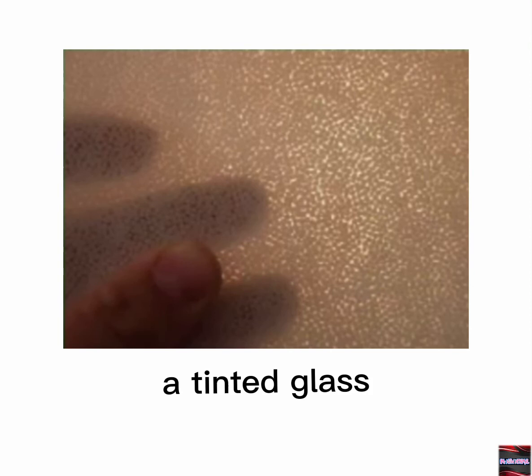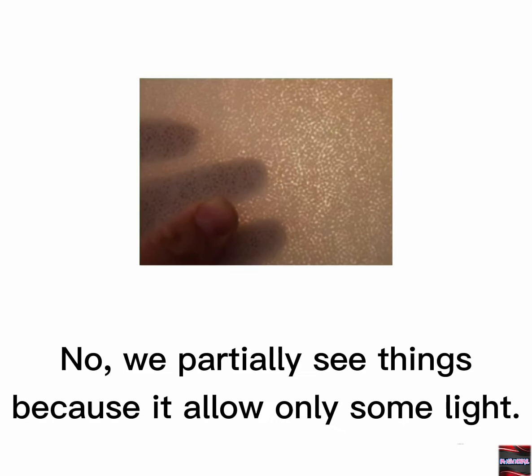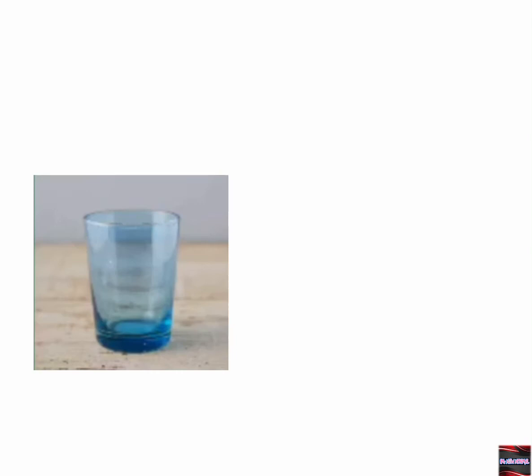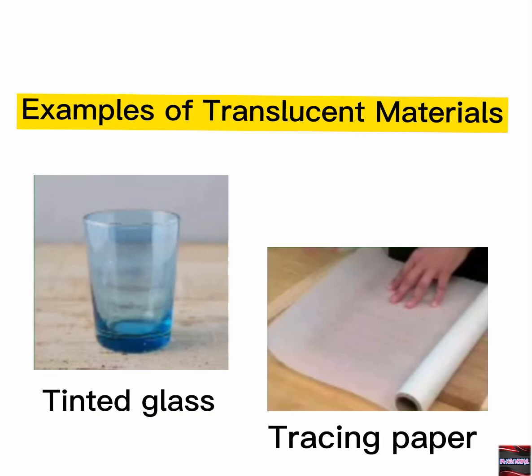A tinted glass — can you see things clearly? No, we partially see things because it allows only some light through. Tinted glass is an example of a translucent material. Translucent materials are materials that allow some light to pass through them. Tinted glass and tracing paper are examples of translucent materials.